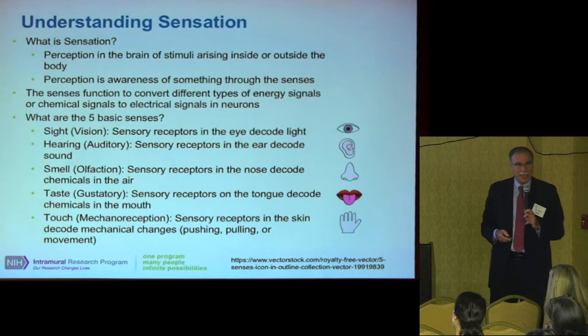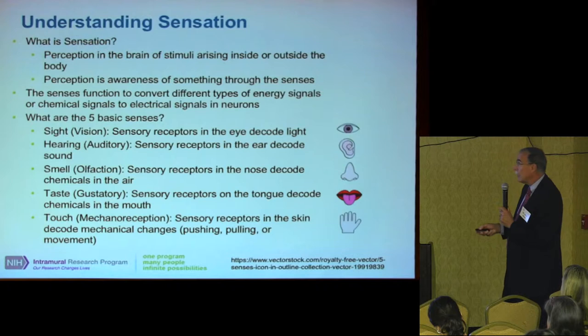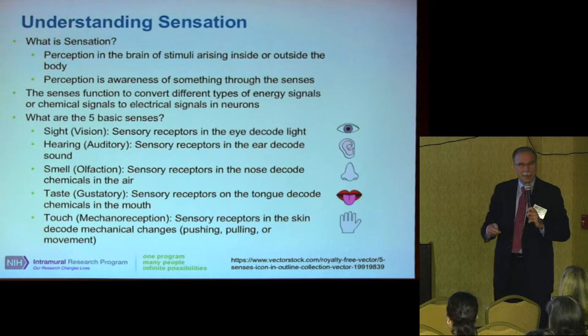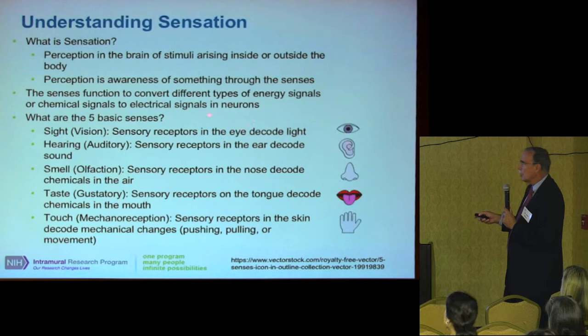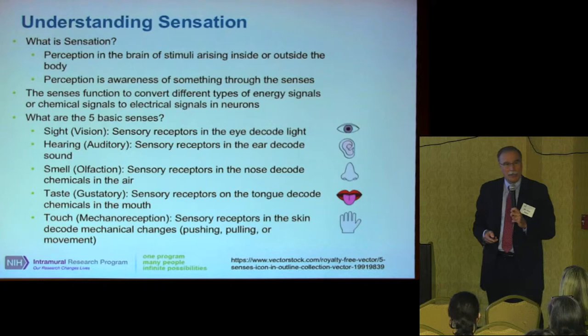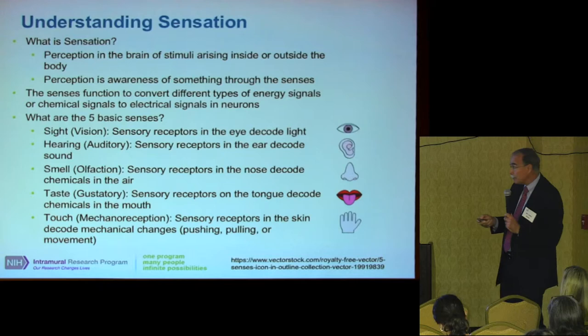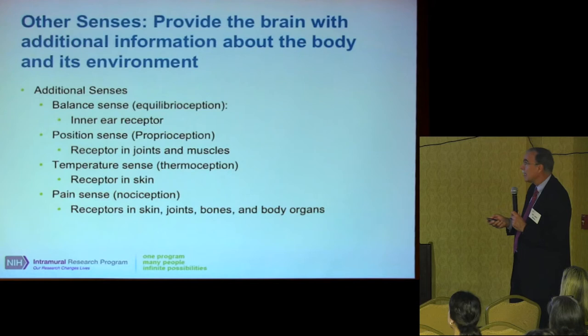Now let me give some background on sensation. There are five basic senses: sight, hearing, smell, taste, and touch. What they share is converting a type of energy — like sound energy — into neural energy the brain can understand. We also have other senses: balance, position sense, temperature sense, and pain.